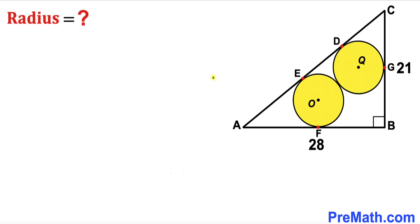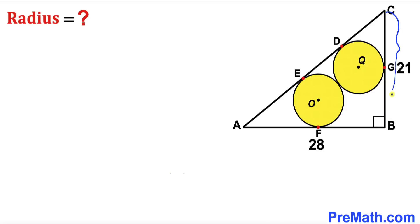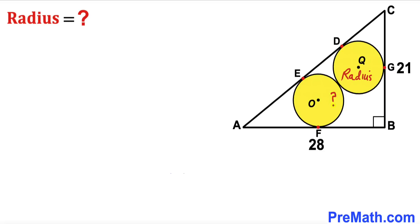Welcome to Pre-Math. In this video we have two identical circles fully inscribed in a right triangle ABC, such that side length AB is 28 and side length BC is 21. O and Q are the centers of these circles, and our task is to calculate the radius of these identical circles.